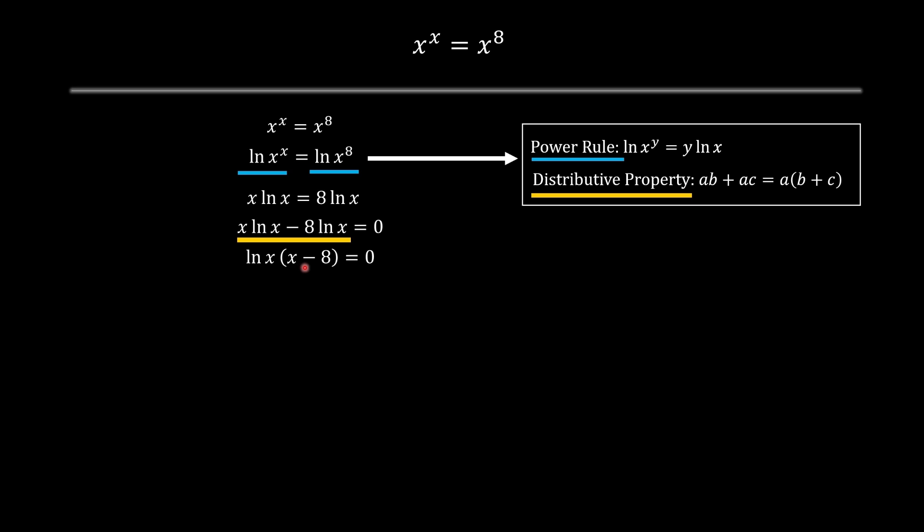We're going to have two real solutions. So ln x contains one real solution, x minus 8 contains another real solution.